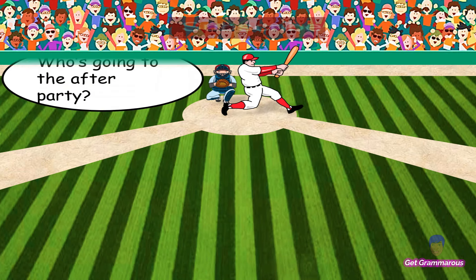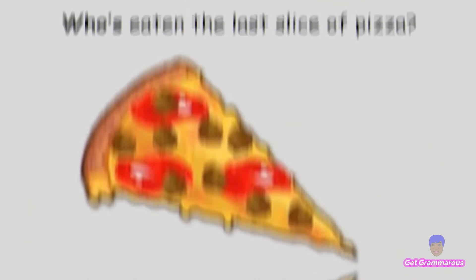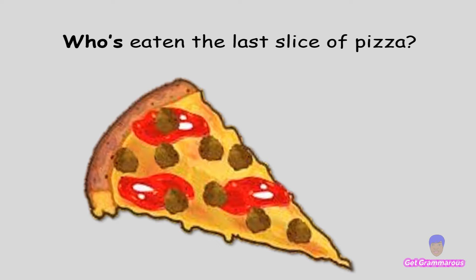For example: 'Who's going to the after party?' Here, who's means 'who is.' Another example: 'Who's eaten the last slice of pizza?' In this context, who's is the contraction of 'who has.'